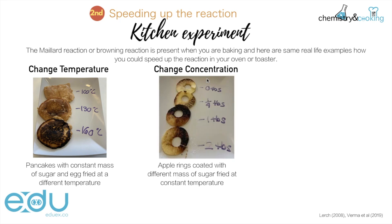Again, how would that look in the kitchen? Let's check it out. The second thing we're looking at is change in concentration. We're using apple rings in this case, coated with different amounts of sugar, and we fry them at a constant temperature. Let's do it.